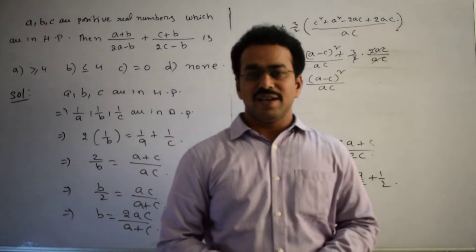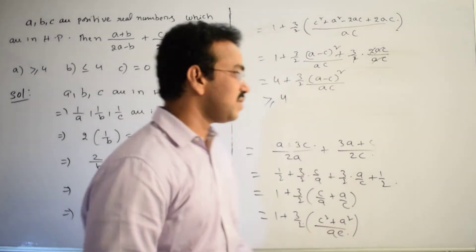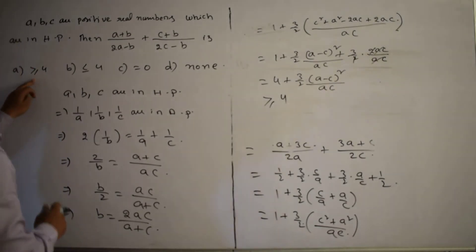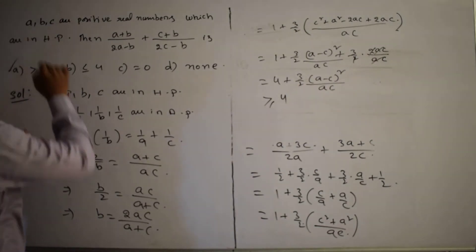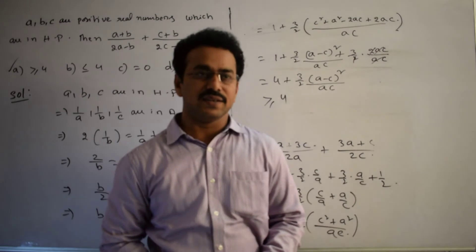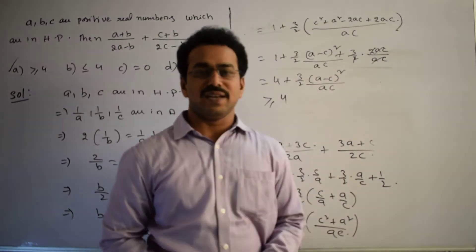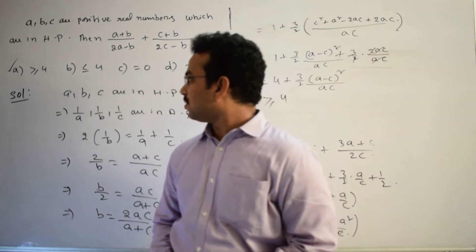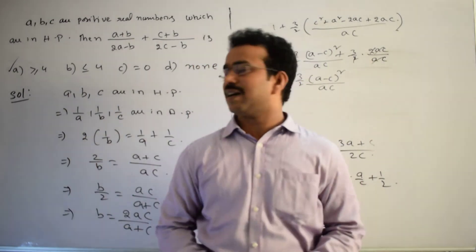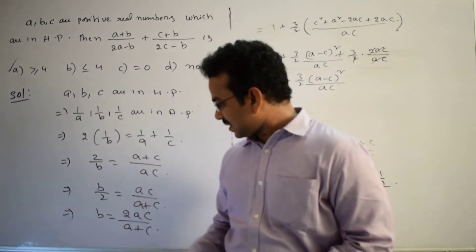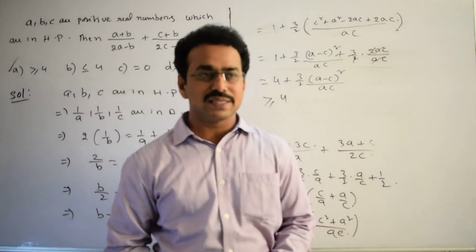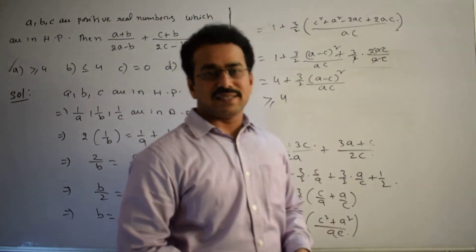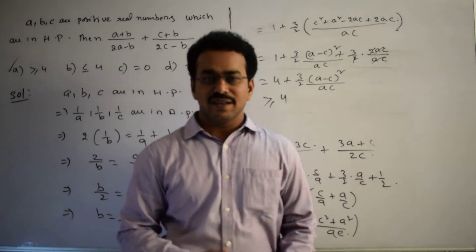So we conclude the expression is greater than or equal to 4. Comparing with the given options, the first option — greater than or equal to 4 — is correct. The process applied: we used A, B, C in HP to write B = 2AC/(A+C), substituted it, and simplified to reach the conclusion. Thanks for watching. All the best.